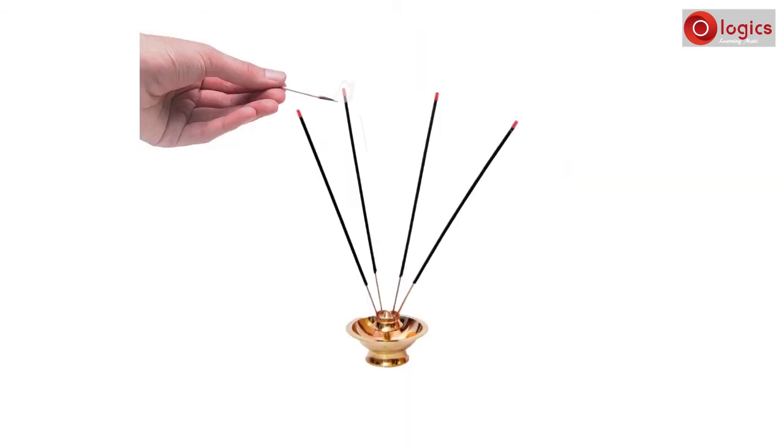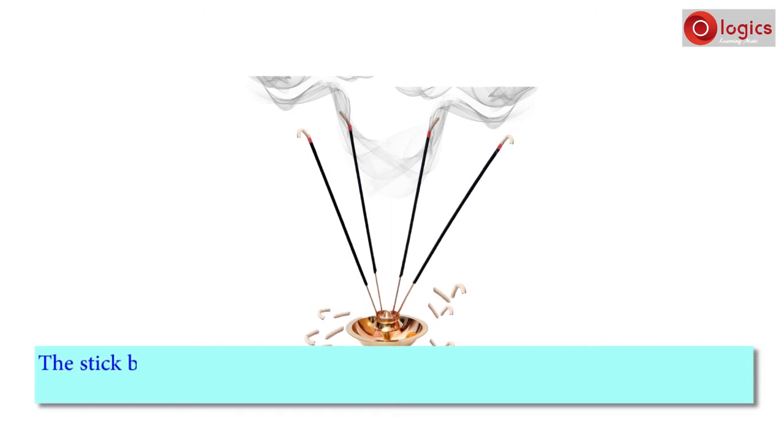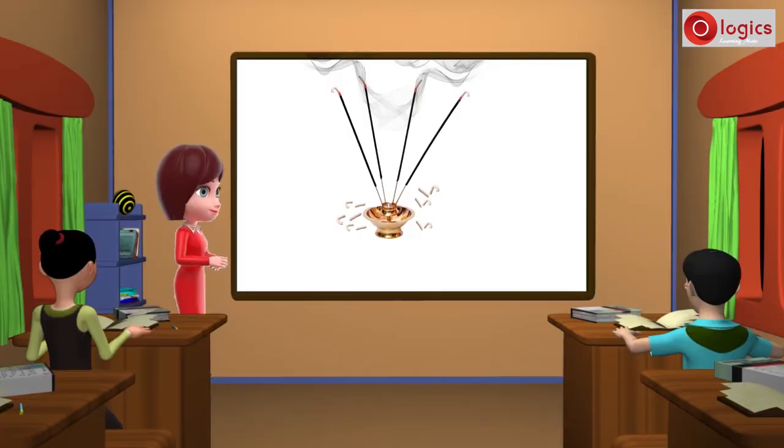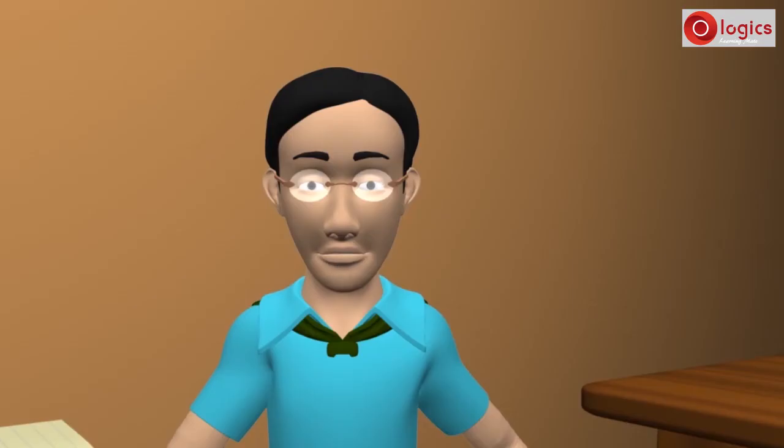Take an incense stick and burn it. What are the changes that occur in the incense stick? The stick burns to produce some new materials. These are ash and some gases. We cannot see these gases but can sense them due to their pleasant smell. Can this change be reversed? No.